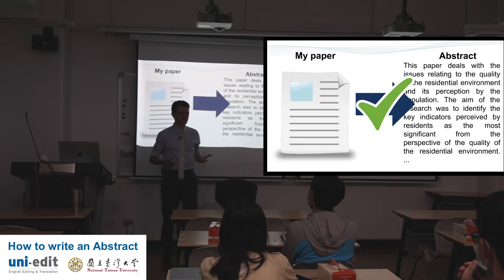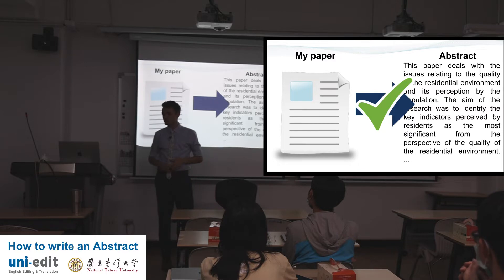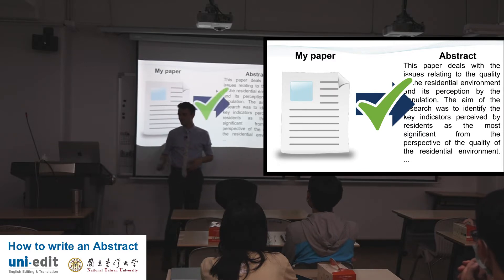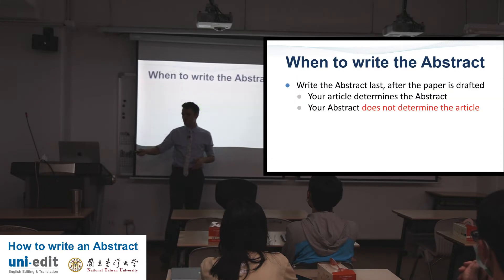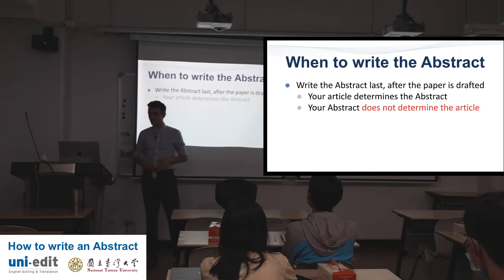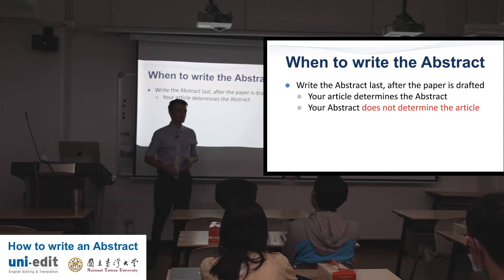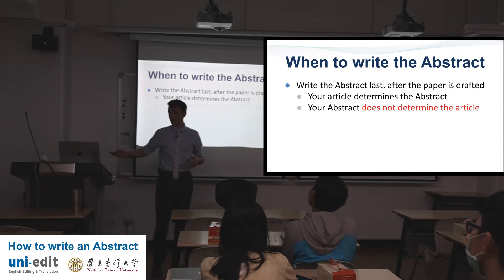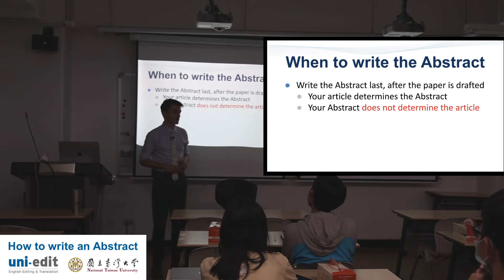An abstract is nice because you get a lot of time to think about it, but you don't need to rush — you need to do it at the end. When to write the abstract: write the abstract last after the paper is drafted. Your article determines the abstract. Your abstract does not determine your article.